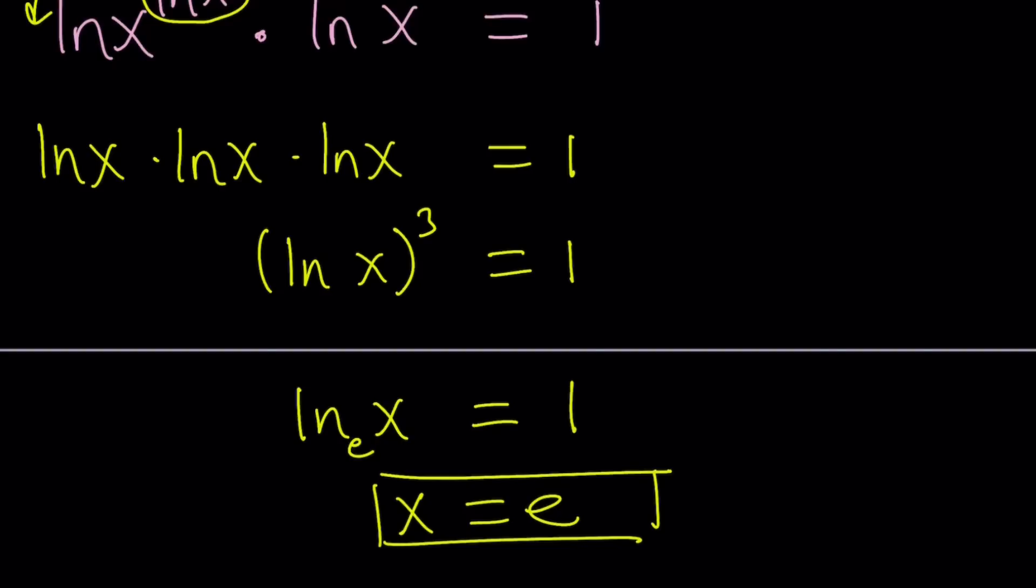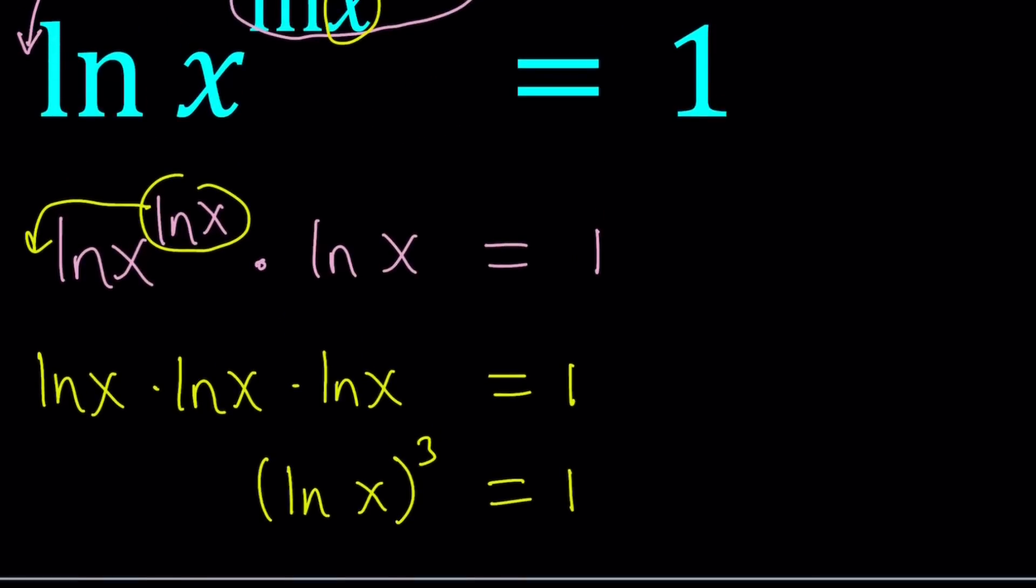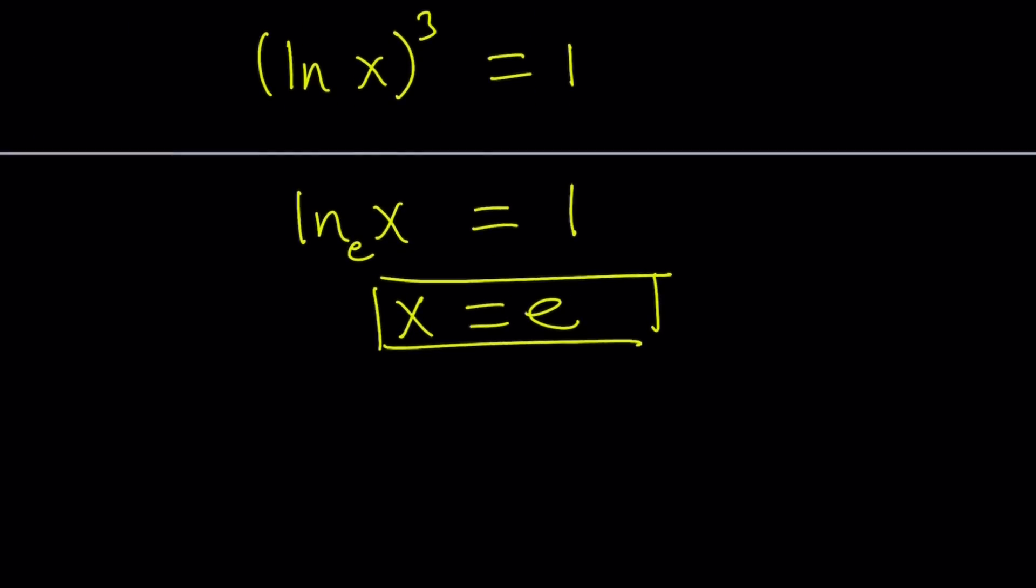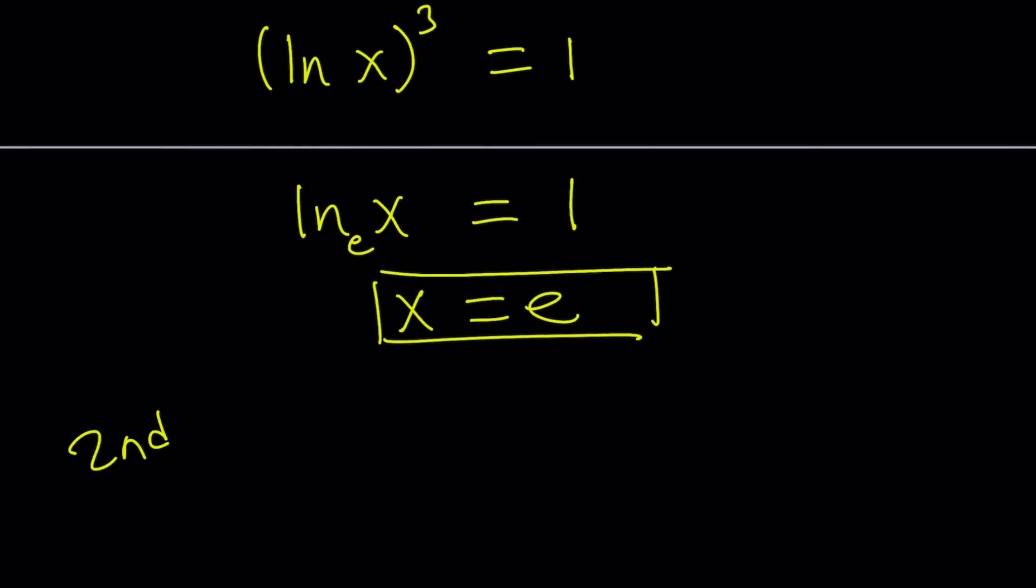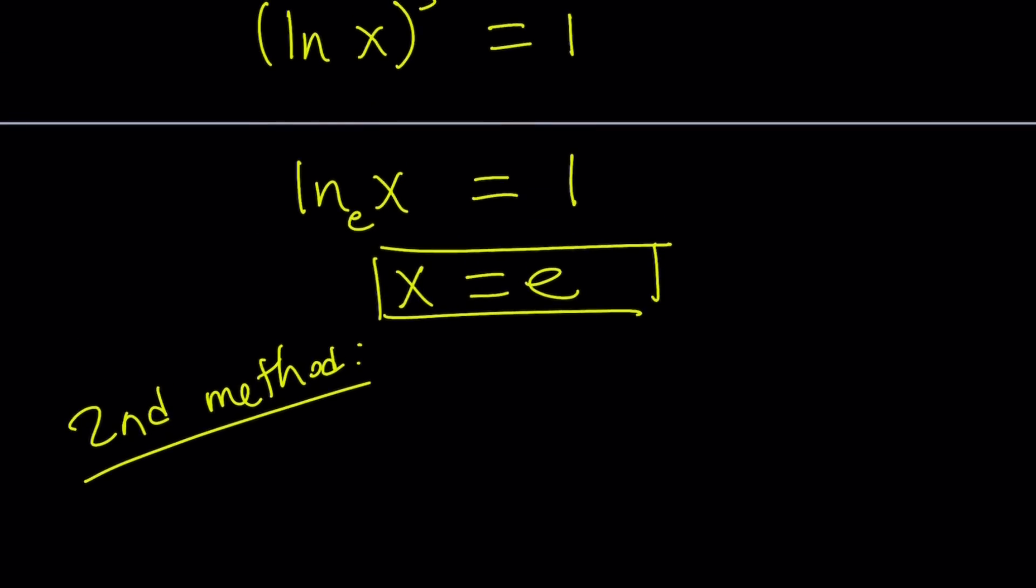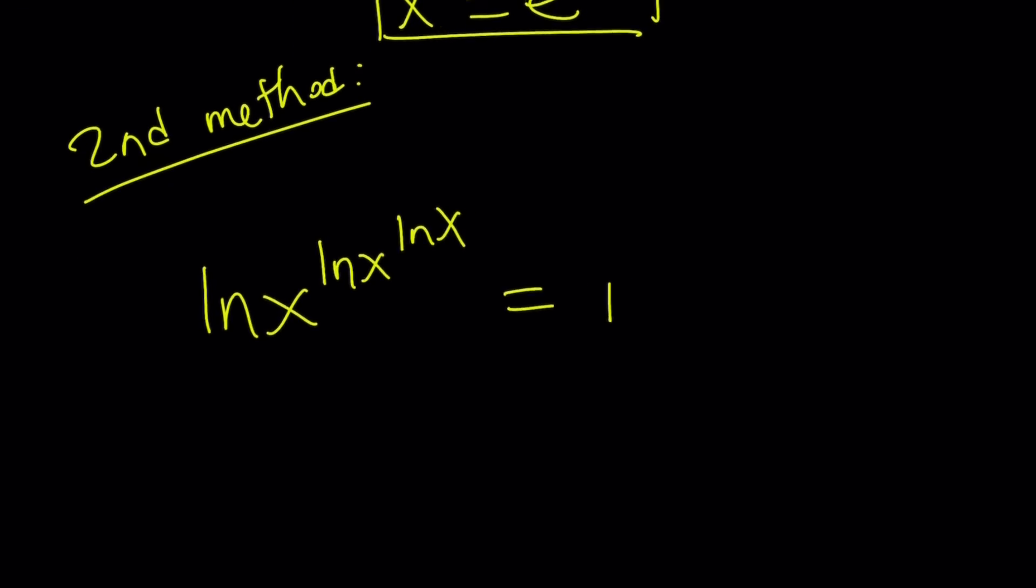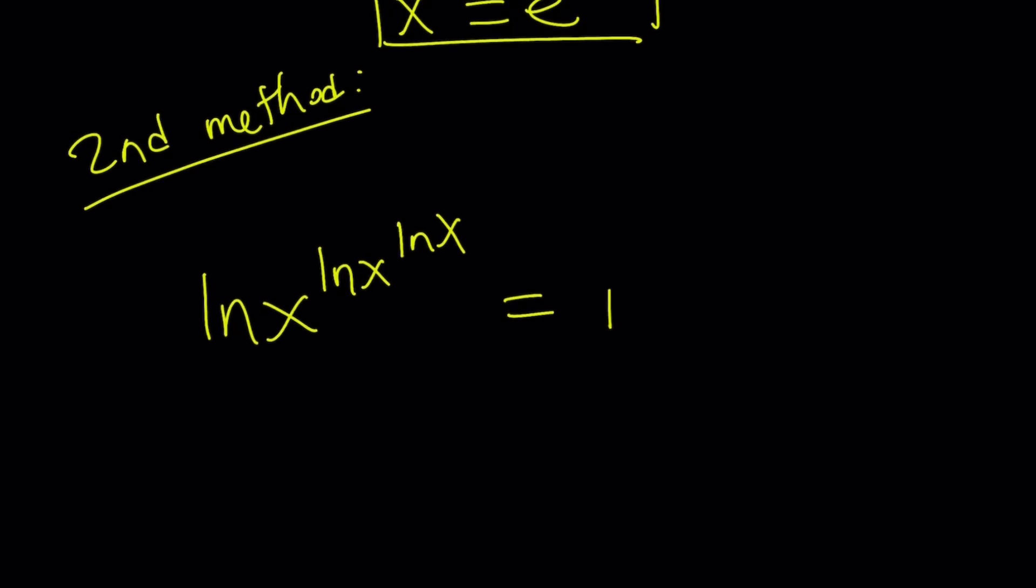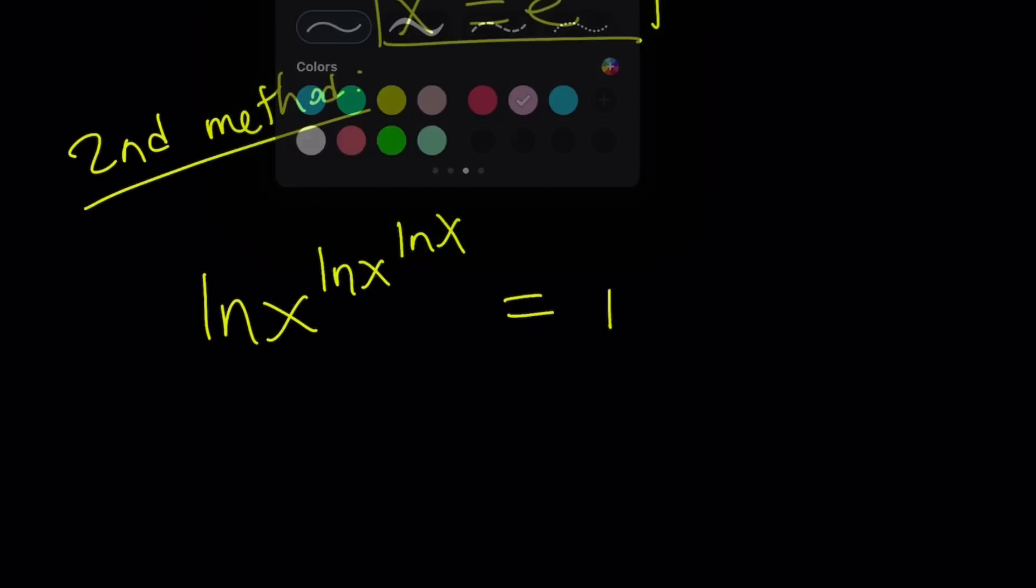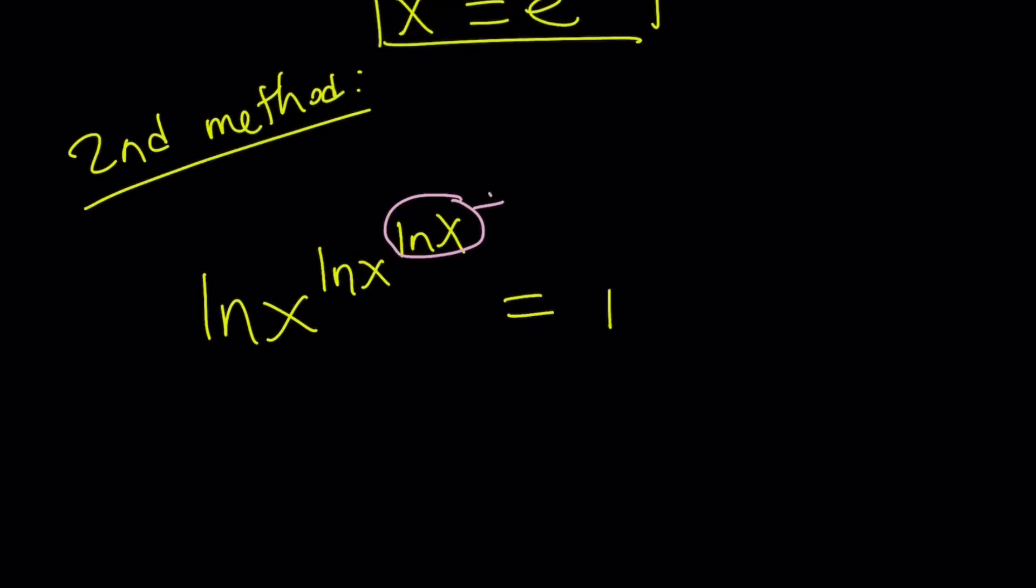Let's go ahead and take a look at the second method. Let's call this first method, and we'll look at the second method. Then we'll talk about a couple other things before we can conclude the number of solutions. So, second method. Let me rewrite the original problem first: ln x to the power ln x to the power ln x equals 1. I'm going to use substitution, obviously. Let's do the following. I want to call ln x something. How about calling this t? Okay. You've got to be careful here.